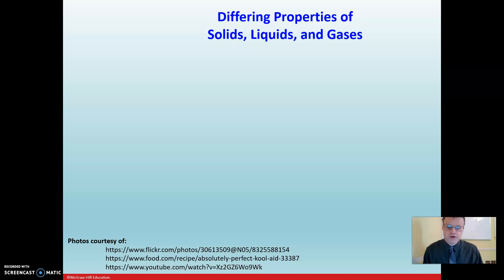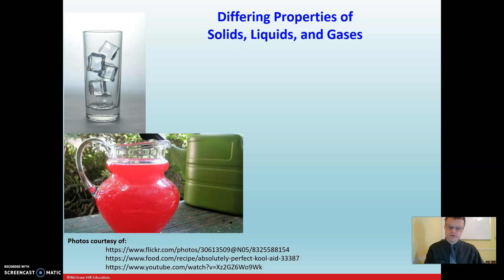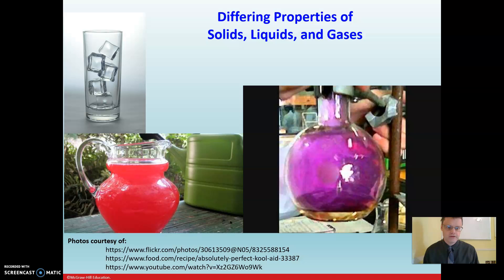Solids and liquids and gases have different properties, and we can get a little bit specific about what makes them different. You can see we've got some ice cubes here in a glass, which is a little bit different from when we have liquid in a glass. The liquid kind of takes the unique shape of its container. And gases tend to fill a container completely, whereas liquids don't do that. We can categorize these properties to differentiate between these three phases of matter.